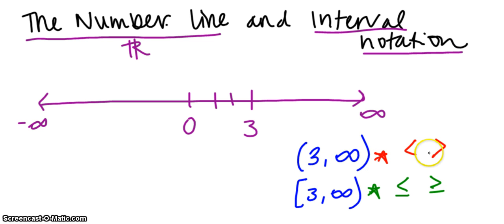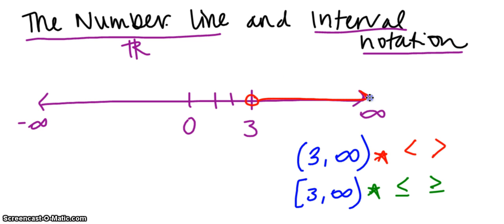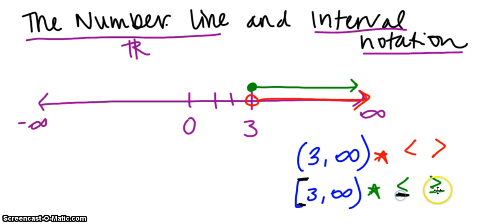When we graph these on a number line, if I'm talking about 3 to infinity with a parenthesis, I'm talking about not 3 itself, but everything bigger than 3. Whereas with a bracket, I'm including 3 and everything greater than 3. A good way to remember: with a bracket, you have to write a horizontal bar, so bracket replaces one of the inequality signs with an equal to.